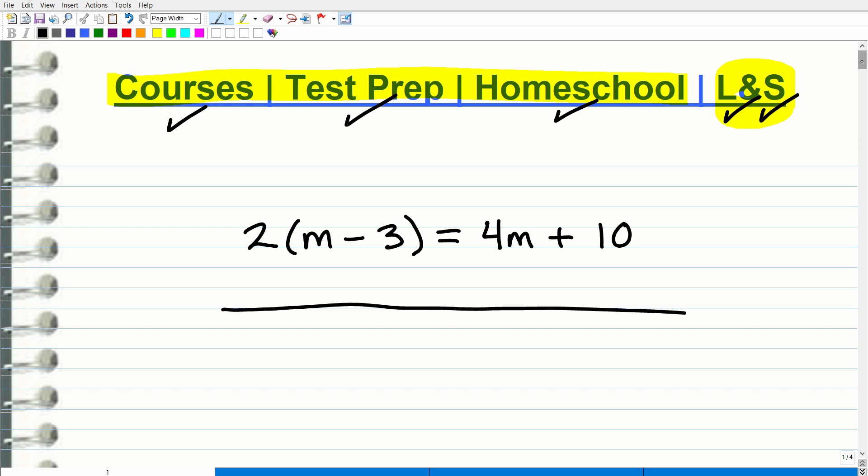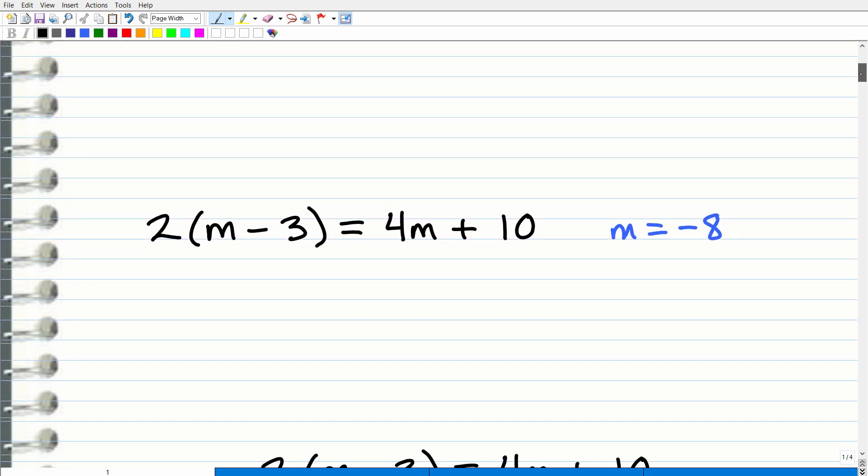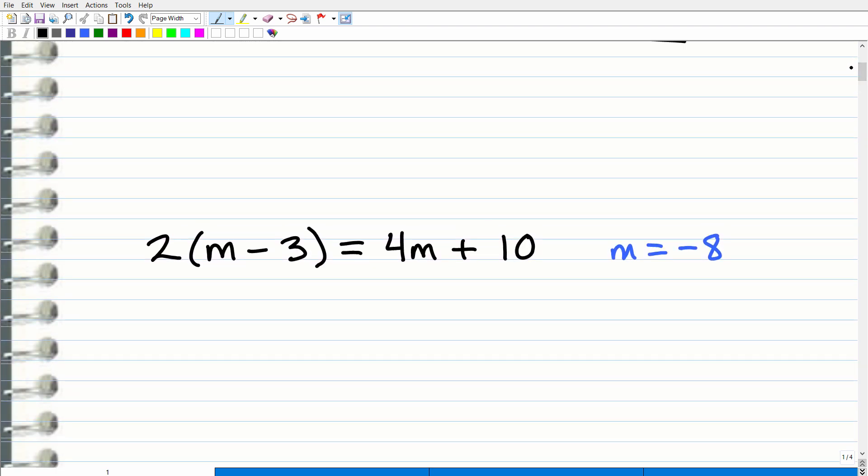And I'm going to show you the solution in just one second. And here we go. All right. So the problem is 2 times m minus 3 is equal to 4m plus 10. Again, a very standard type of algebra homework problem. The answer is m is equal to negative 8.